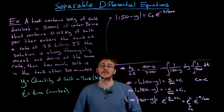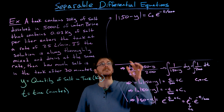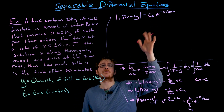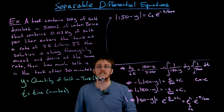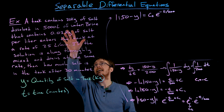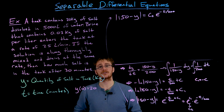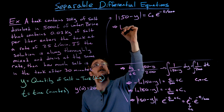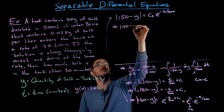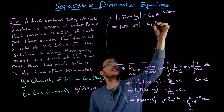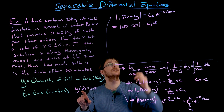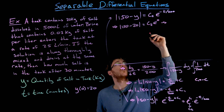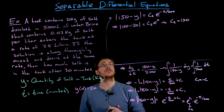We can find c₂ using the initial condition. Initially the tank contains 20 kilograms of salt, so y(0) = 20. Substituting: |150 minus 20| = c₂ · e^0 = c₂ · 1. Therefore c₂ = |130| = 130.